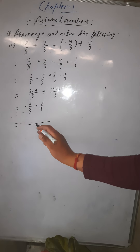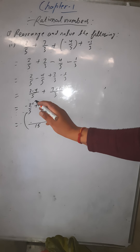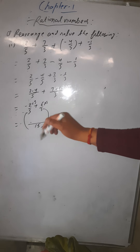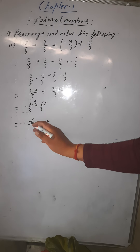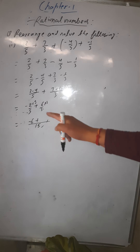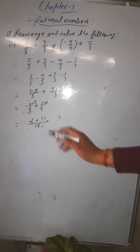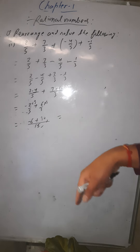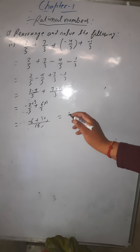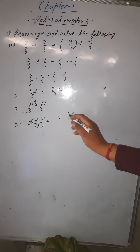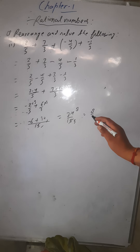Now we have minus 2/5 plus 6/3. They don't have the same denominator, so take the LCM of 5 and 3, which is 15. Divide 15 by 5 — goes 3 times — so multiply numerator by 3: minus 6. Divide 15 by 3 — goes 5 times — multiply numerator by 5: 30. So we get minus 6 plus 30 over 15. Since minus and plus are subtracted and the greater is 30, the answer is plus 24/15.